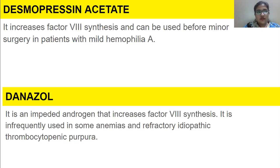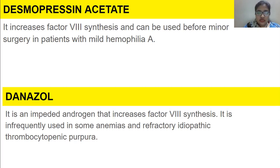Other agents that increase clotting capacity include desmopressin acetate, which increases factor 8 synthesis and can be used before minor surgery in patients with mild hemophilia, in order to promote coagulation.